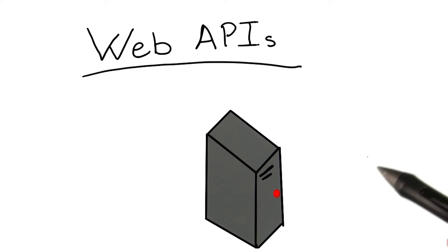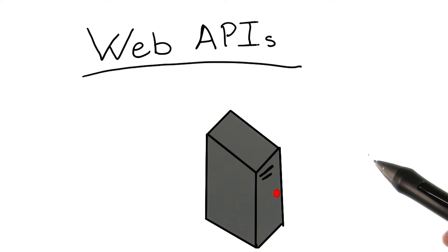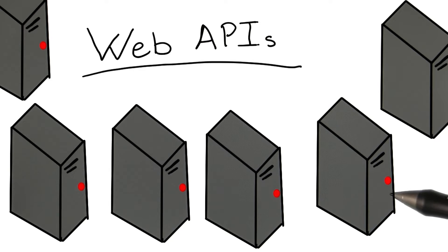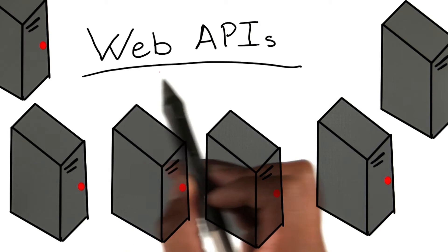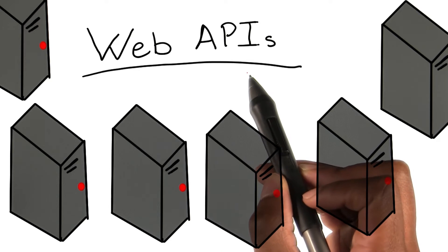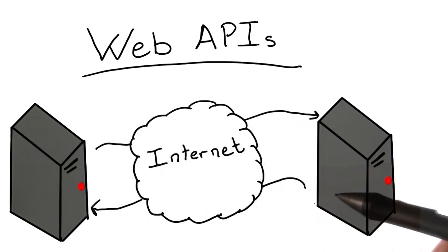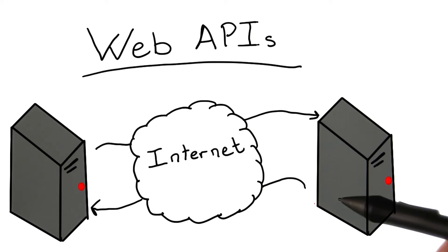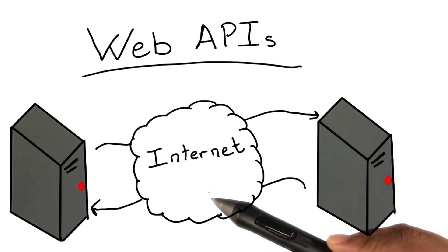You've seen some examples of how APIs can work within the same machine. But what this course is really going to focus on is how APIs can enable communication between several machines. This is where web APIs come into the picture. Simply put, web APIs make it possible to invoke the execution of code on another machine via the internet.